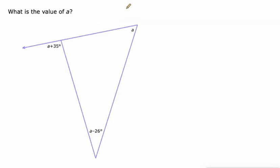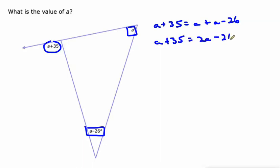One more. Again, this exterior angle is equal to the sum of the other two. So if we're trying to find A, it's A plus 35 is equal to A plus A minus 26. Pretty much the same problem as the last one. We'll just combine like terms on the right. A plus A is 2A. Let's subtract A from both sides. And then lastly we'll add 26 to both sides which gives us 61 degrees for the measure of A.